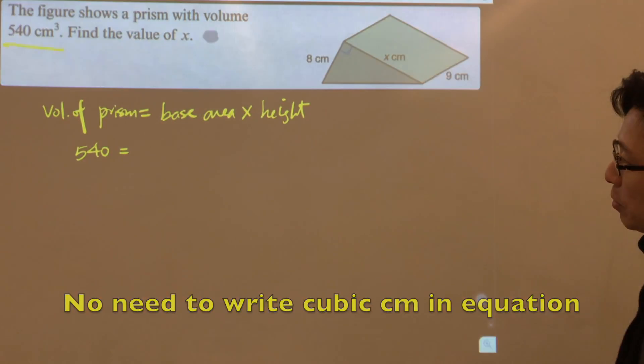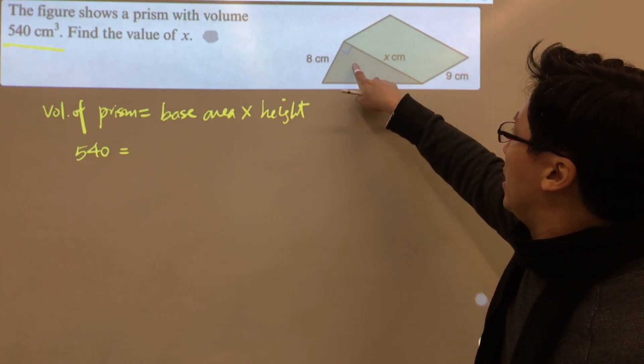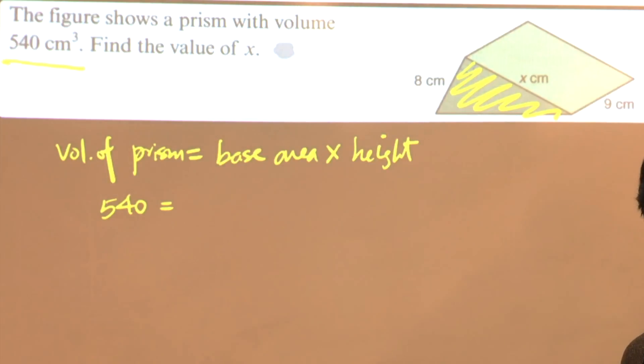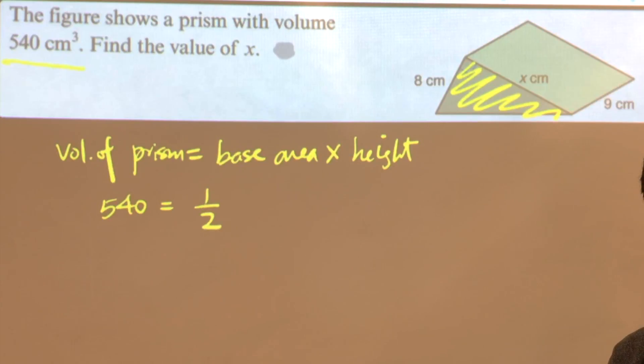unit in the equation. The base area, well this is the base area. The area of a triangle will be 1/2 times